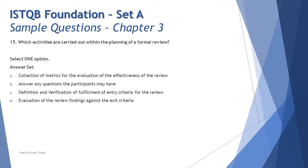Option B therefore is not something that happens in the planning phase. Option C — definition and verification of fulfillment of entry criteria for the review — is worth considering. Entry criteria is a checklist of items which, once satisfied, allow you to start the process. It's the last activity of the planning phase: once planning is complete, you evaluate your entry criteria and, if all is set, move into the next phase, which is initiate review. This seems to be a good option.